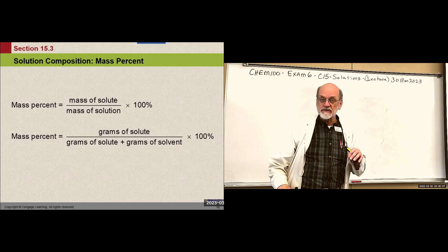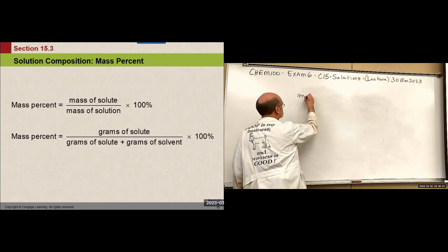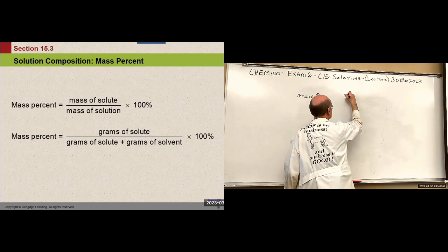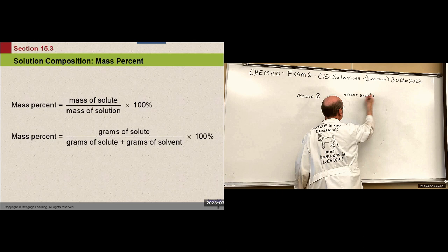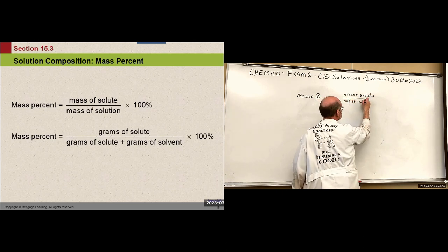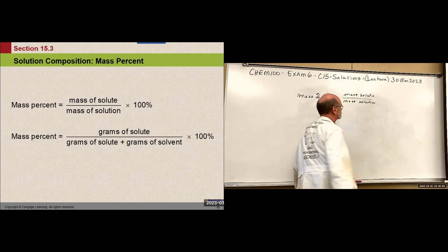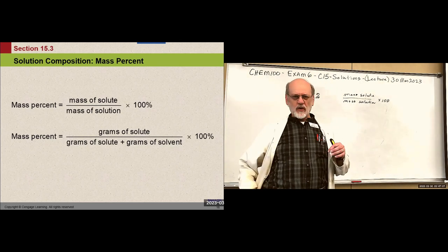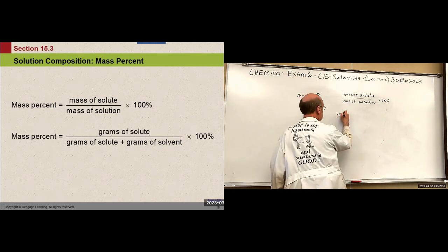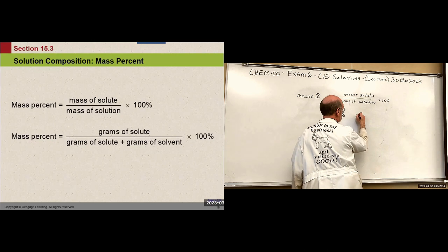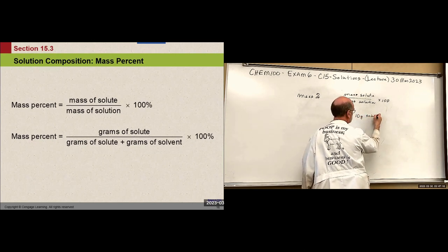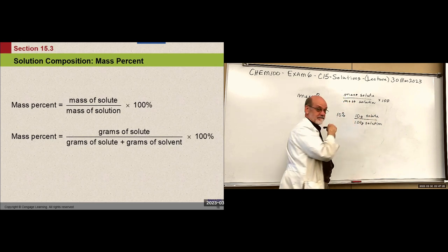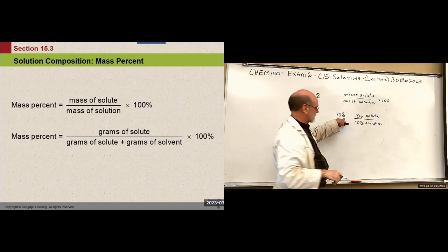Mass percent is one that's very common. Mass percent means mass of solute per mass of solution, times 100 — that gives you mass percent. So if it's 10%, we know that we have 10 grams of solute per 100 grams of solution. That's parts per 100.